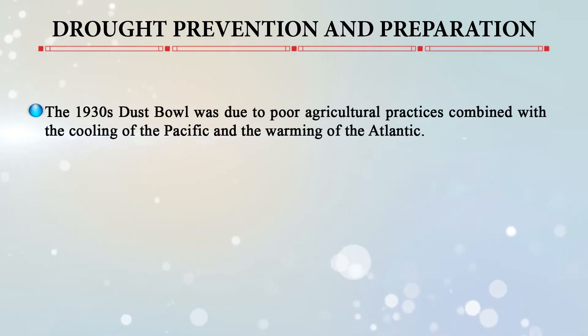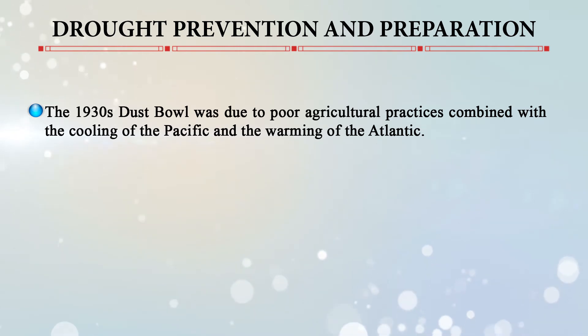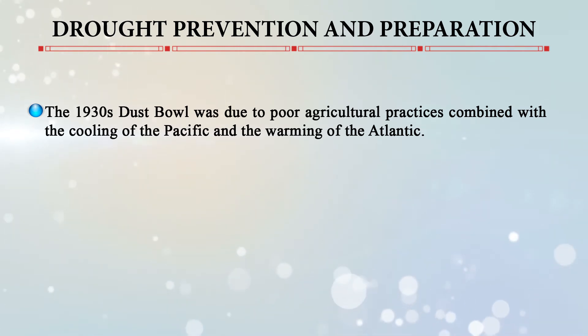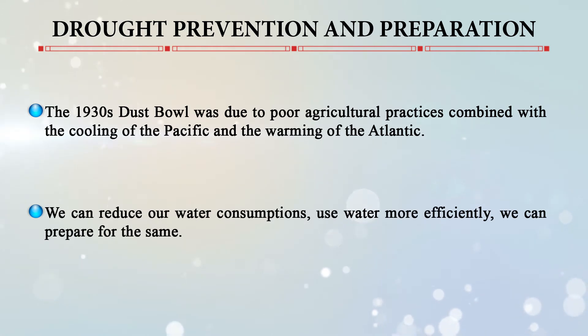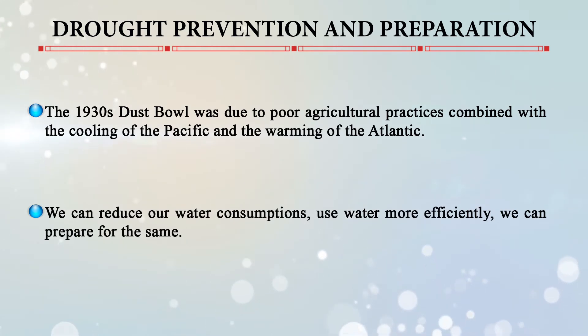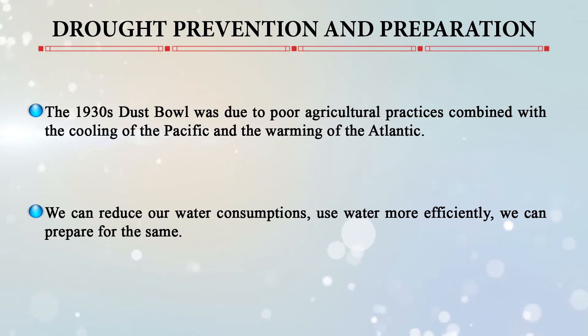How can we prevent and prepare for droughts? The 1930s Dust Bowl was caused by poor agricultural practices combined with cooling of the Pacific and warming of the Atlantic. We can reduce our water consumption, use water more efficiently, and prepare for drought through several strategies.